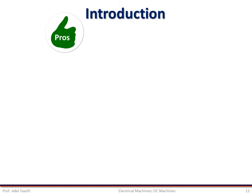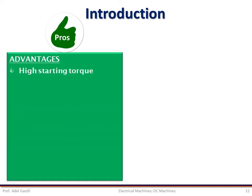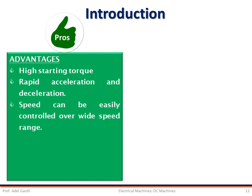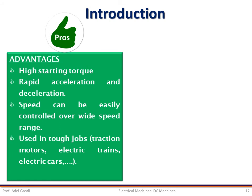The advantages of DC machines can be enumerated as follows: they produce high starting torque, they have rapid acceleration and deceleration, their speed can be easily controlled over a wide speed range, they are used in tough jobs such as traction motors, electric trains, electric cars, and they are built in a wide range of sizes.